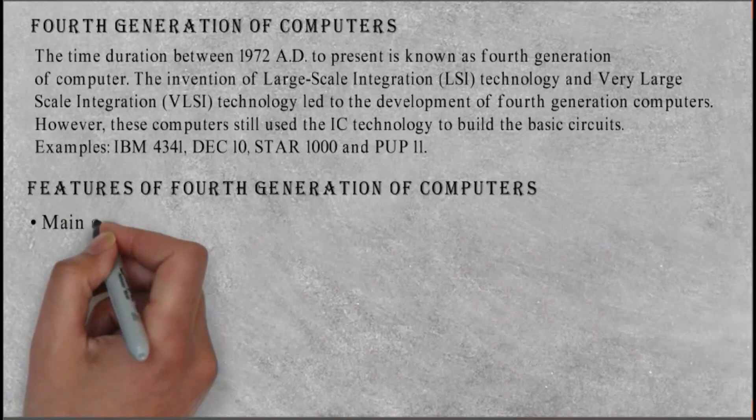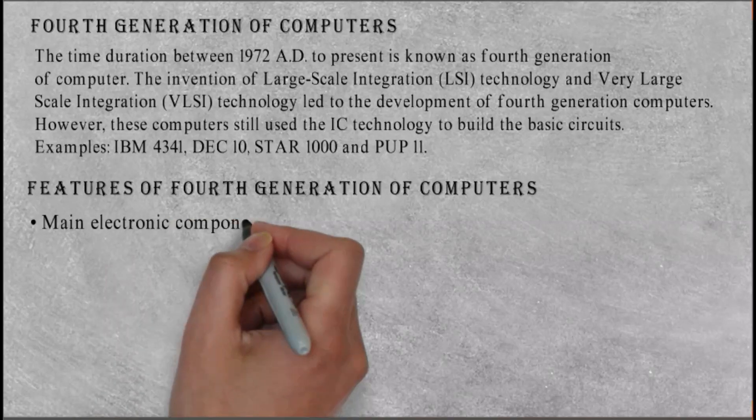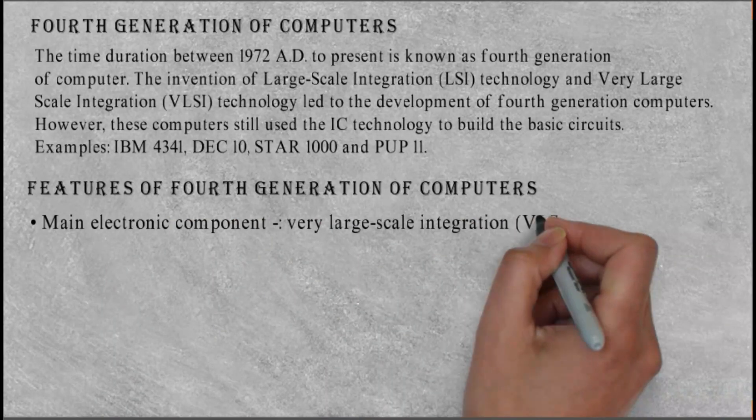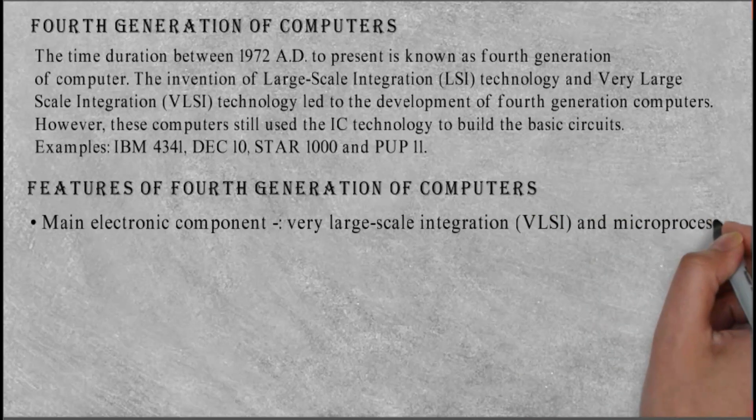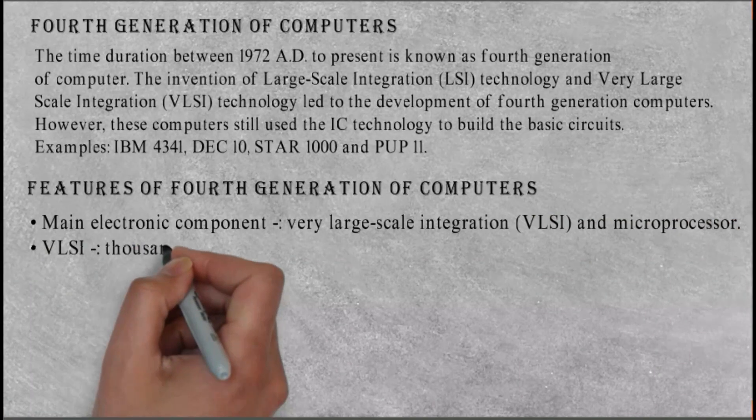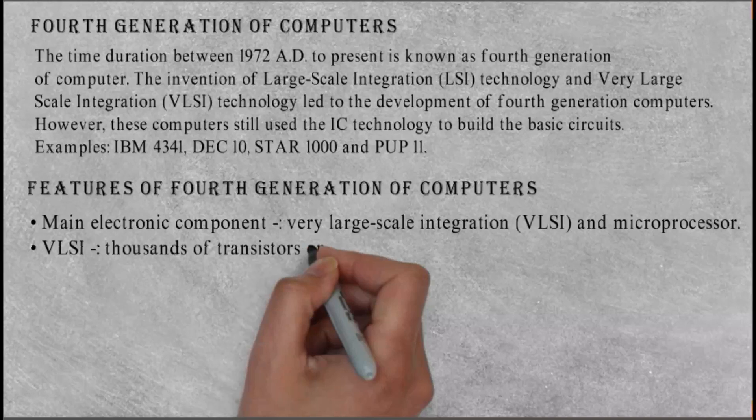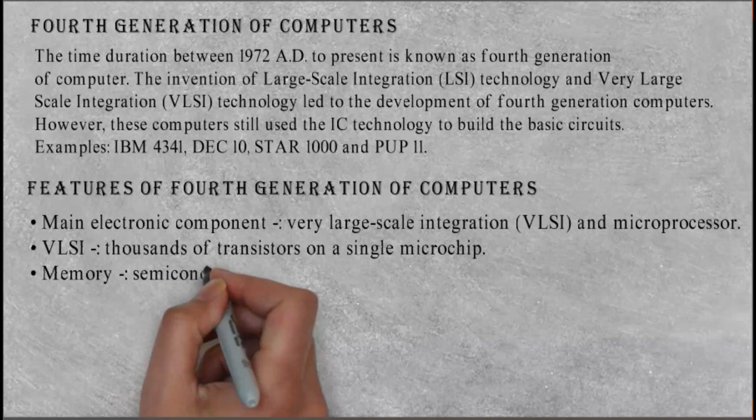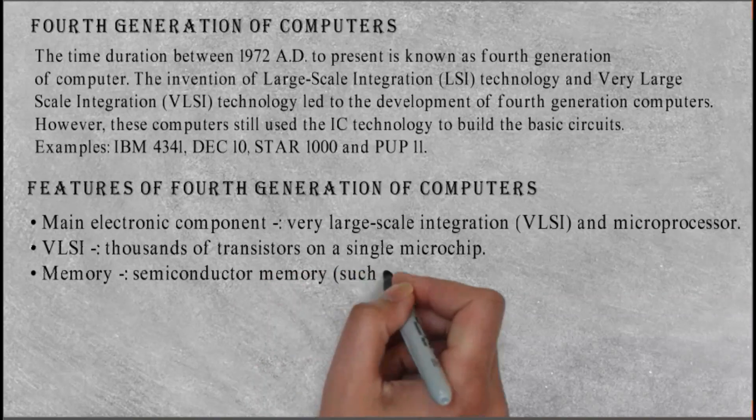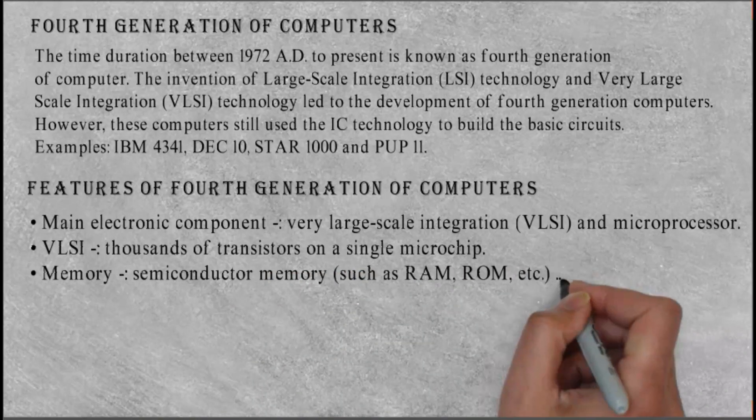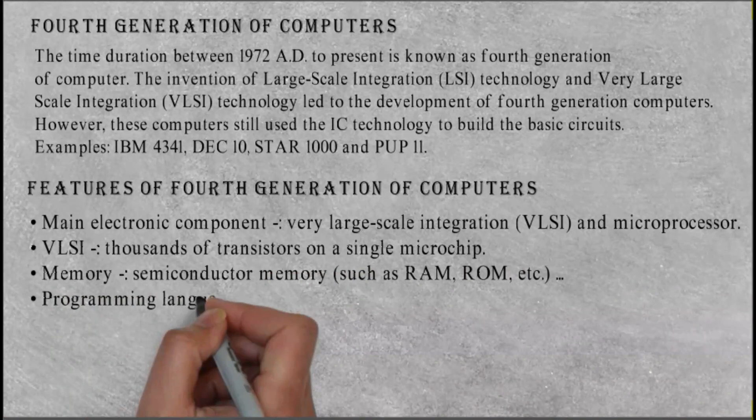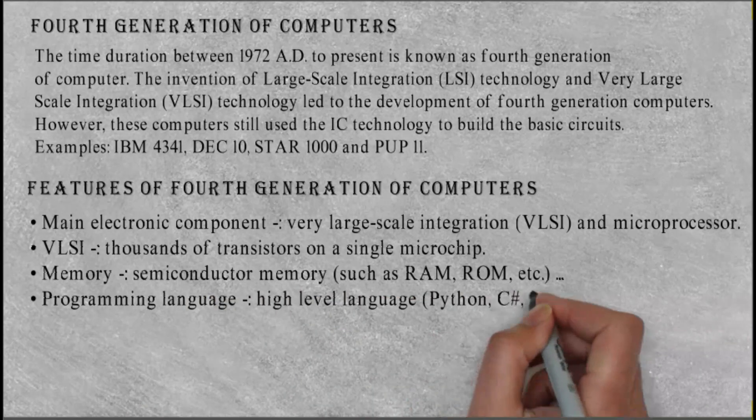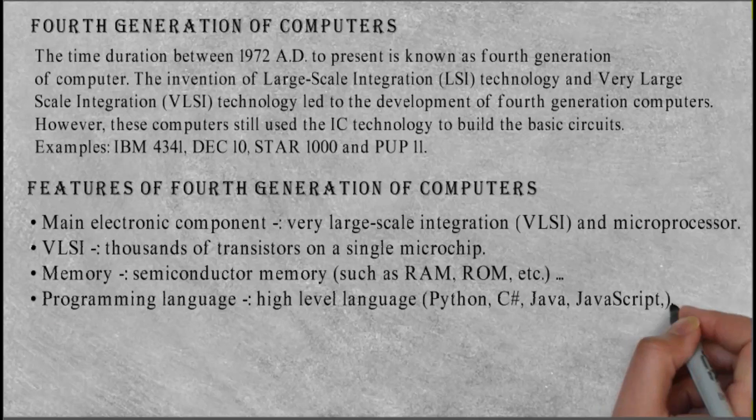Features of fourth generation of computers: Main electronic component: very large scale integration (VLSI) and microprocessor. VLSI: thousands of transistors on a single microchip. Memory: semiconductor memory, such as RAM, ROM, etc. Programming language: high-level language—Python, C-sharp, Java, JavaScript. Processing speed: nanoseconds.